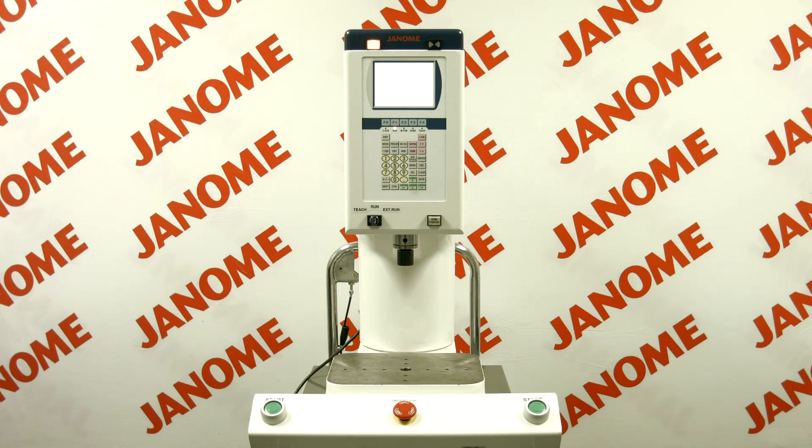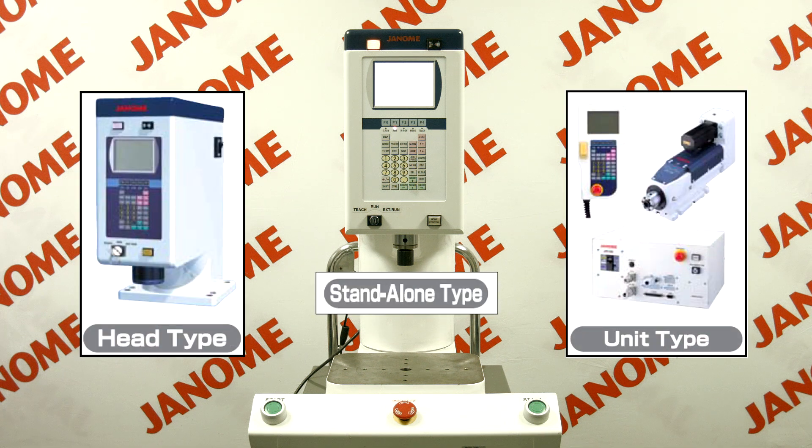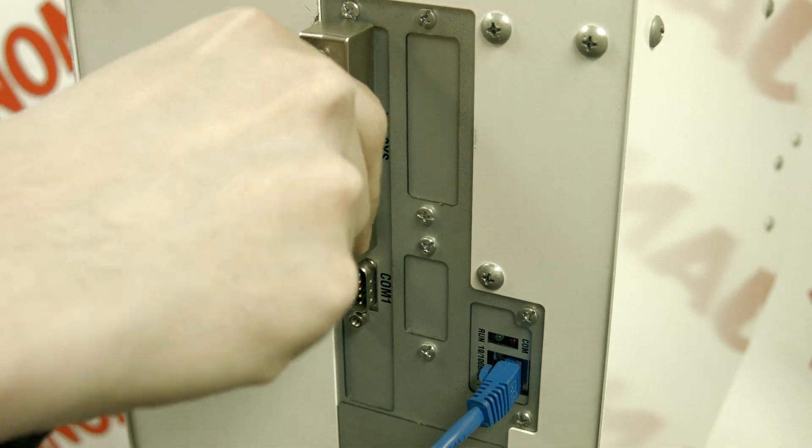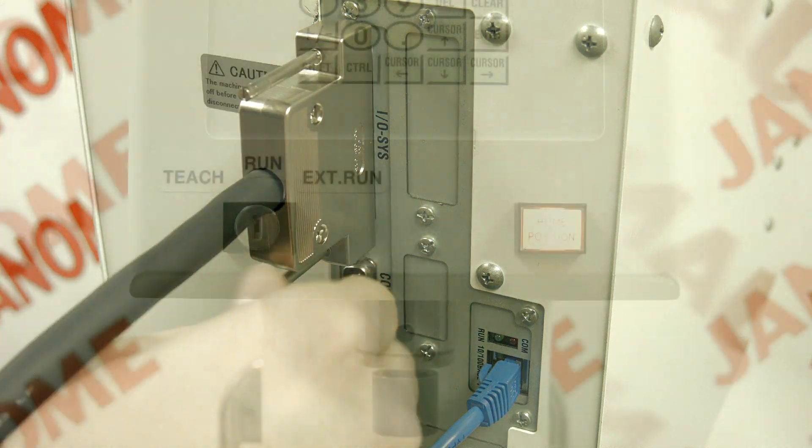There are three types of electropress: the standalone, head, and unit types, with the pressing capacity ranging from 0.5 to 120 kN. They are each equipped with I.O. for controlling various systems and are designed for a wide variety of uses from automation systems to desktop use.